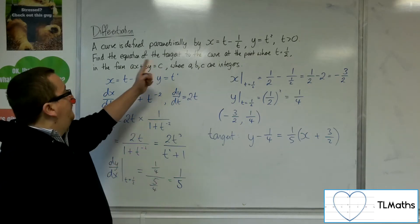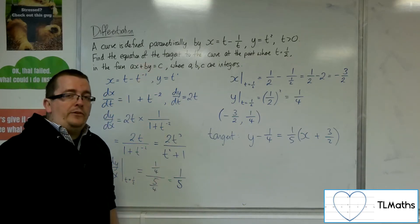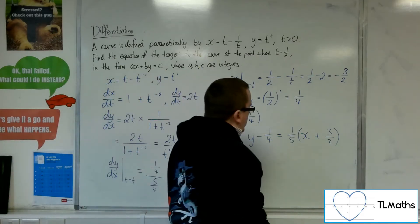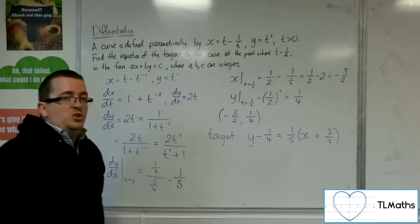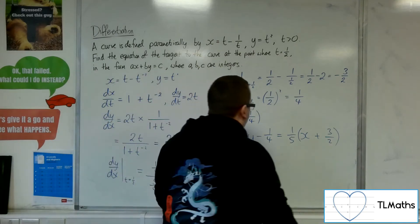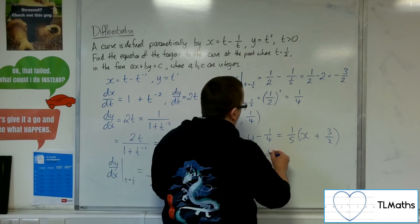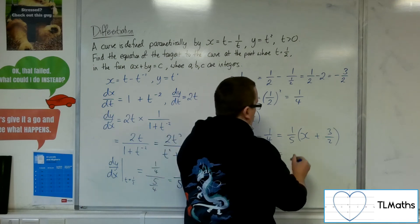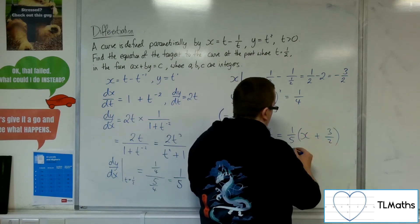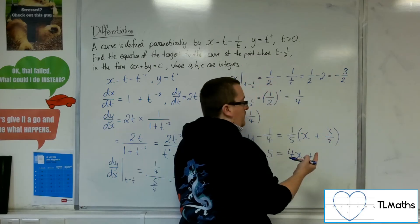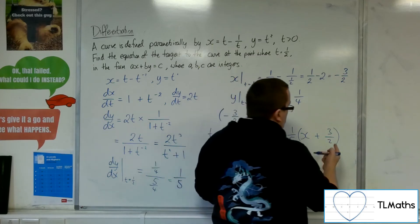Now, I want to get it into the form of ax plus by equals c where a, b, c are integers. So, I need to get rid of the quarter and the 1 fifth. So, I'd multiply both sides by 20 in order to do that. So, I'm going to get 20y minus 5 is equal to 4 lots of this. So, 4 lots of x and 4 lots of 3 halves, which is 12 halves, which is 6.